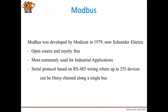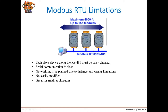Modbus was developed by Modicon in 1979, which is now owned by Schneider Electric. Modbus is open source and royalty-free and is the most commonly used industrial protocol. It's a serial-based protocol using RS-485 traditionally, and you can connect up to 255 devices along a single bus. Modbus RTU has limitations because each slave device along the RS-485 must be daisy-chained, serial communication is slow, and networks must be planned due to distance and wiring limitations. This is great for small applications, but for larger applications the distance limitation and single-bus daisy-chain can sometimes be a problem.